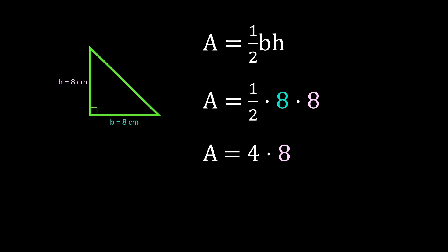We still need to multiply by that second 8. So our area is 4 times 8. 4 times 8 is 32, so our area is 32 centimeters squared.